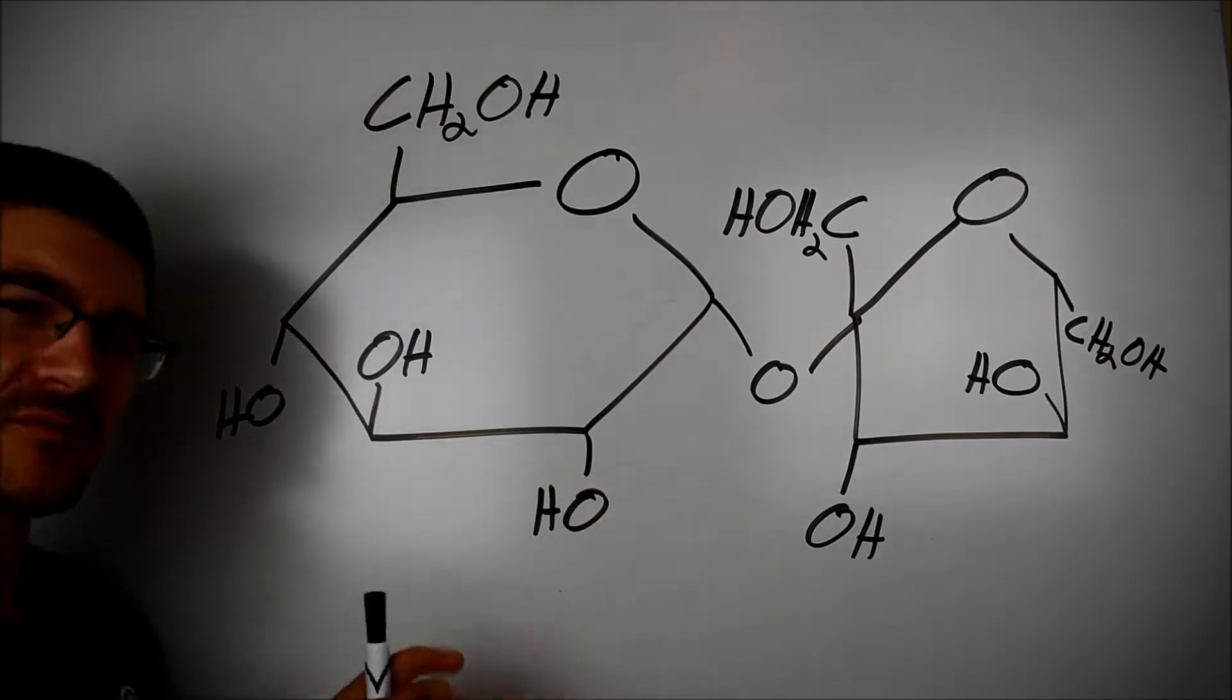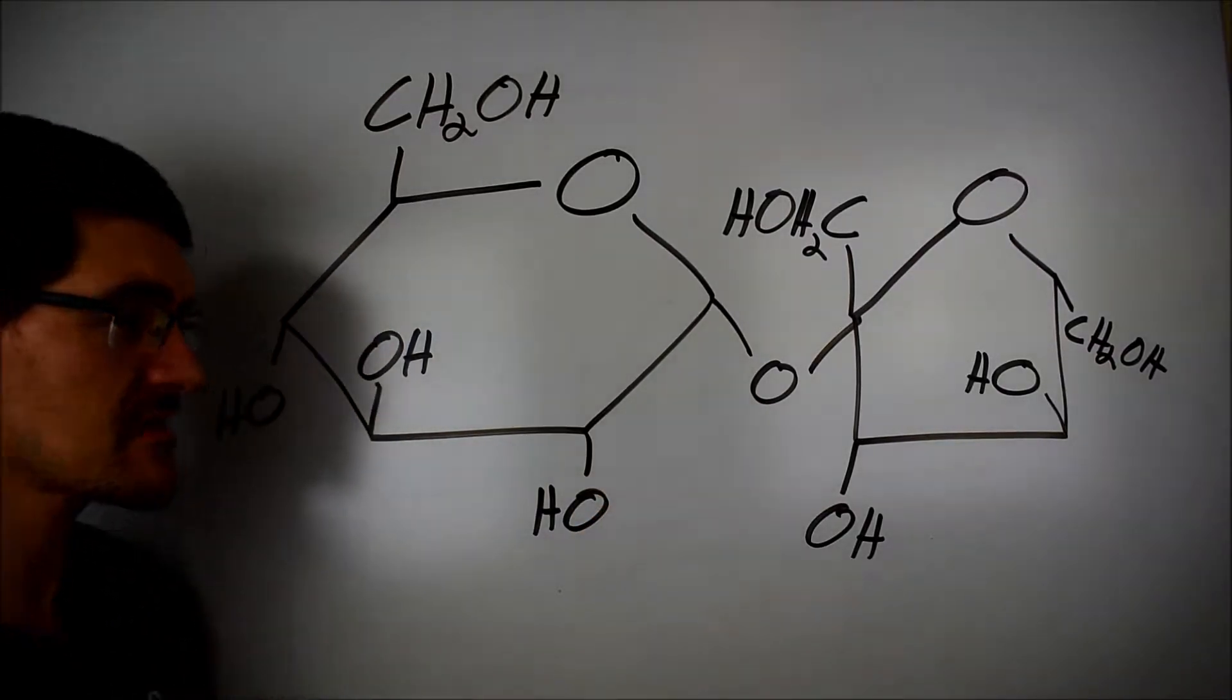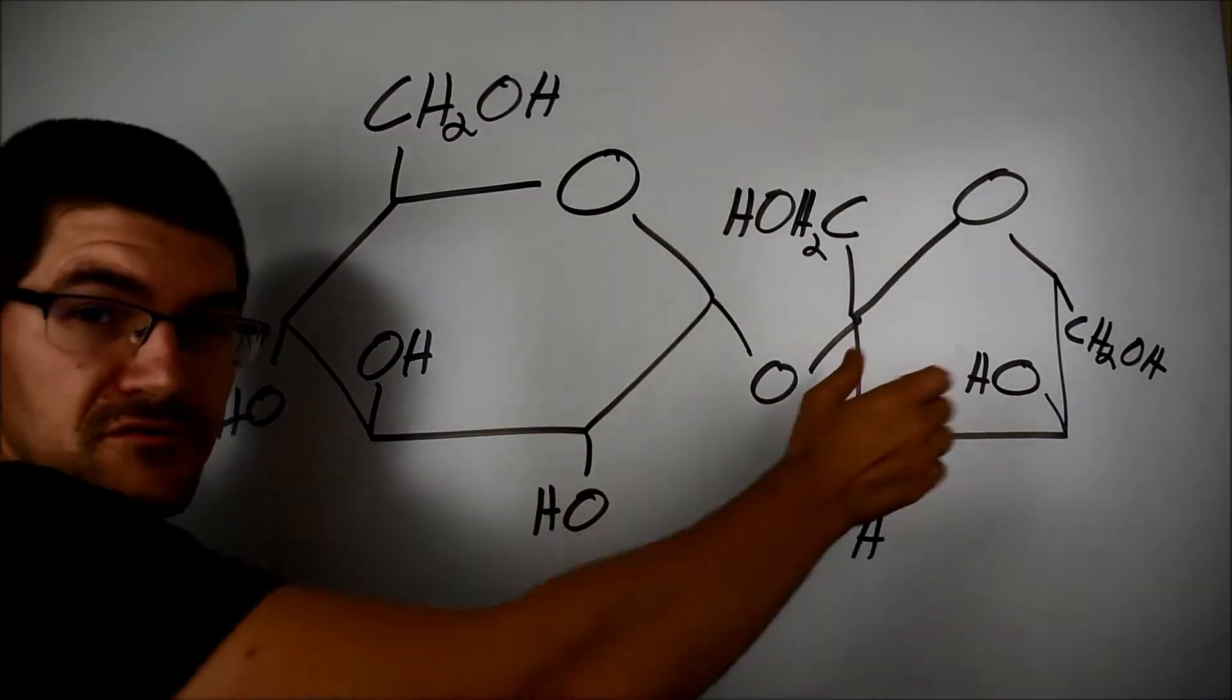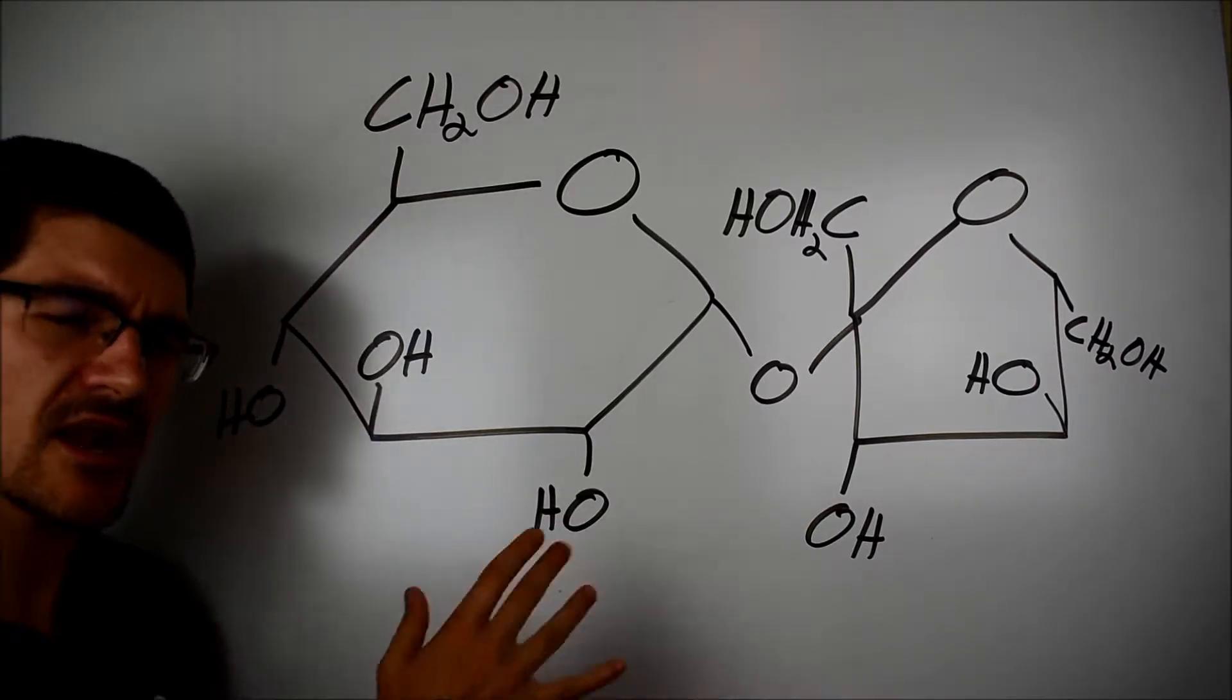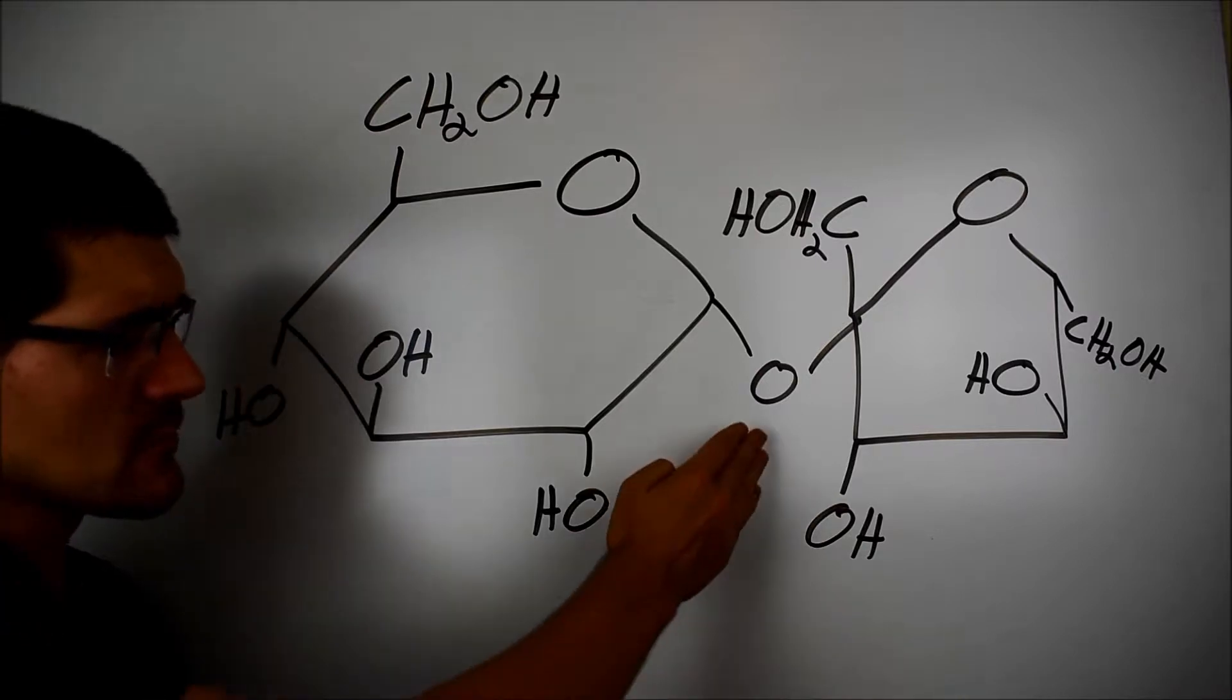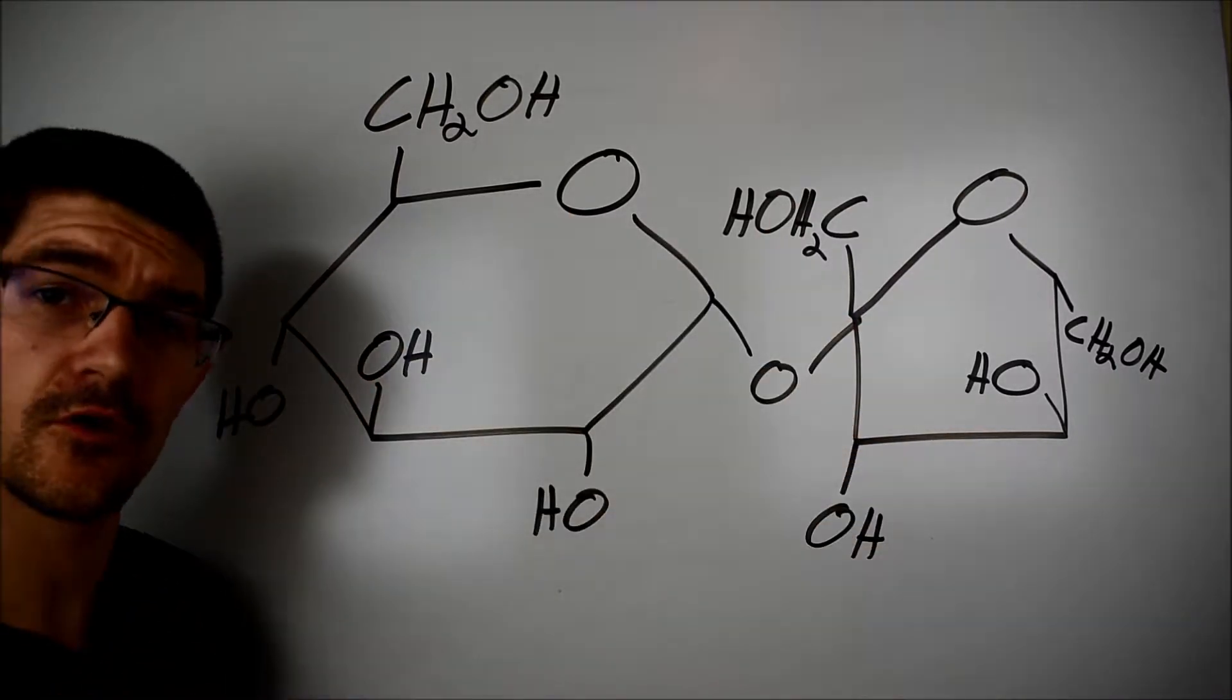After we get our sucrose up to its decomposition temperature, about 185 Celsius, the first thing that happens is the cleaving of this glycosidic bond, separating our glucose and fructose monosaccharide units. It happens from residual water that's hanging around on the sucrose anyway, being that sucrose is hygroscopic and all. So the water cleaves this glycosidic bond and we get our individual monosaccharide glucose and fructoses.